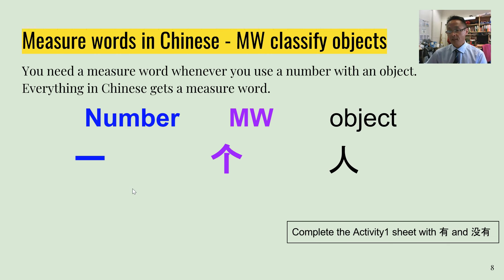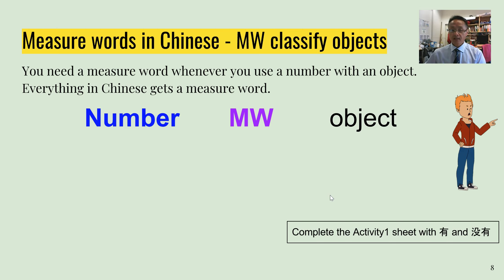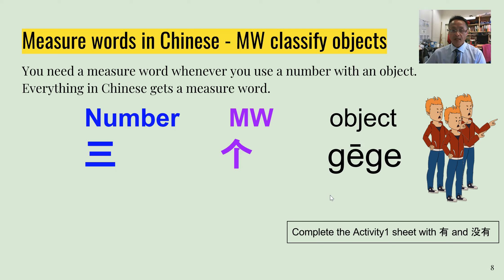两本书 is what we used last time when we talked about stationery. Now, people — 个 is one of the measure words for people: 一个人, one person. Same when talking about family members — for example, three older brothers would be 三个.